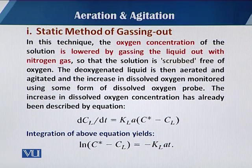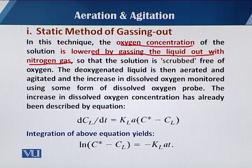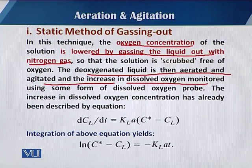In the static method of gassing out, the oxygen concentration is lowered by gassing the liquid with another gas — mostly nitrogen gas is used. The whole medium has to be sparged with nitrogen gas, by which the oxygen in the medium is replaced by nitrogen, scrubbing the solution free from oxygen. The deoxygenated liquid is then aerated with proper agitation, and the increase in dissolved oxygen concentration is monitored using a dissolved oxygen probe.